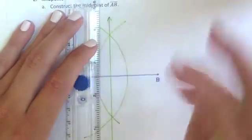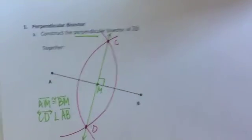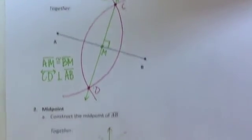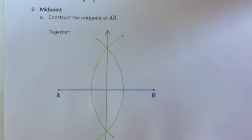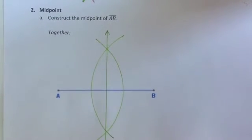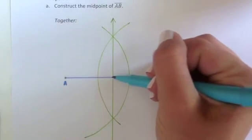The only difference between the two constructions that we've done—the perpendicular bisector and the midpoint—is that if they ask you for a midpoint you actually have to label the midpoint. I labeled it in the last one but I didn't have to.